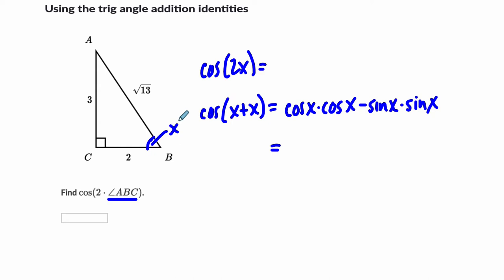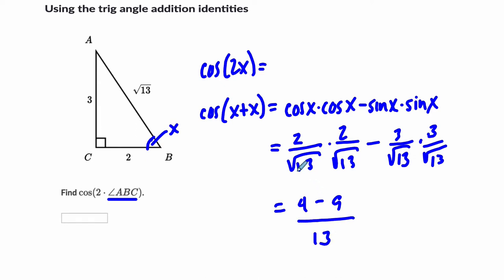this is the cosine addition formula. If we look at it from this angle's perspective, the cosine is 2 over radical 13 times cosine of x, same thing, 2 over radical 13 minus the sine of that angle. So it's 3 over radical 13. Here it's going to be 4 minus 9, 2 times 2 is 4, 3 times 3 is 9, over 13, because radical 13 times itself is just 13, and that's negative 5 over 13, and that's our answer.